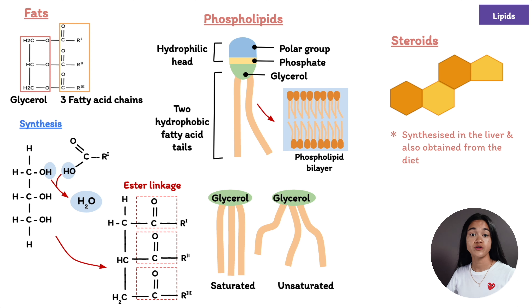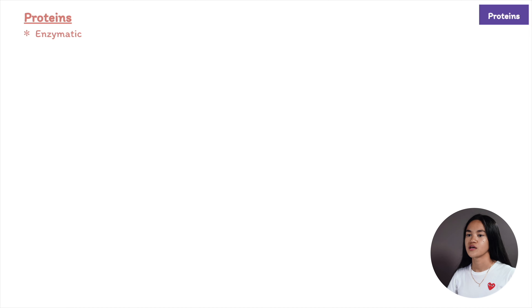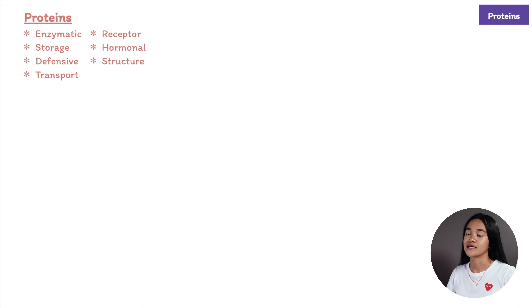The next class is proteins, which provide structural support and act as catalysts that facilitate chemical reactions. There are different types of proteins with different functions: enzymatic proteins which speed up chemical reactions, storage proteins, defensive proteins that protect the cell against disease, transport proteins, receptor proteins, hormonal proteins which coordinate an organism's activities, structural proteins which provide support, and contractile and motor proteins involved in movement.